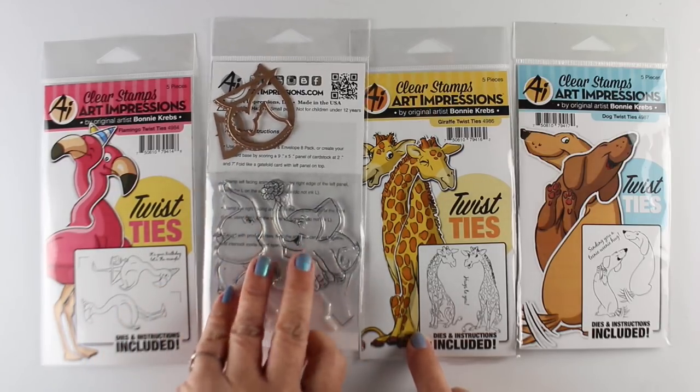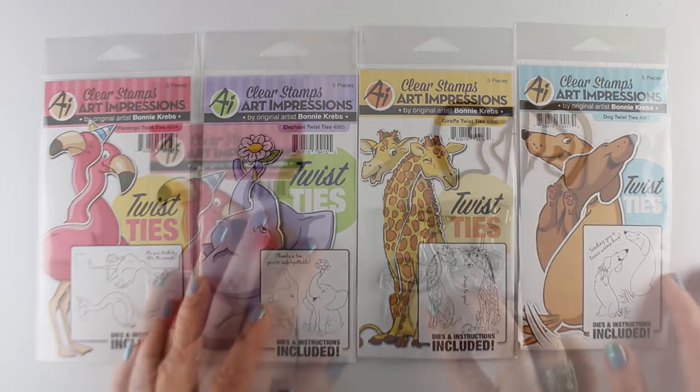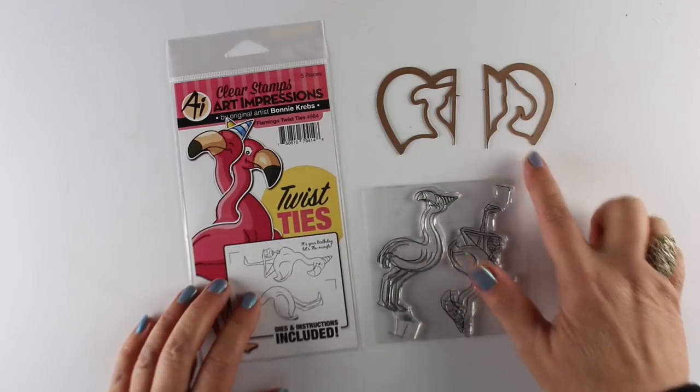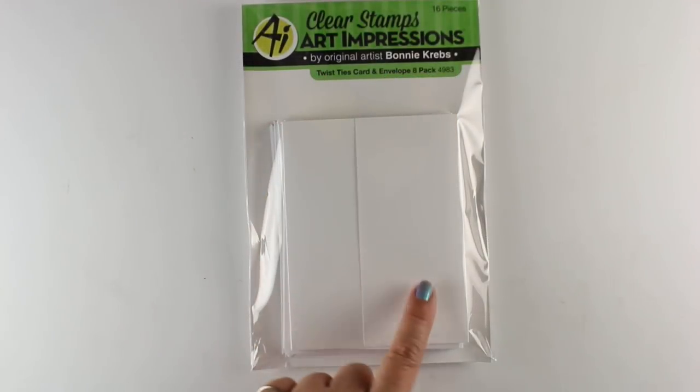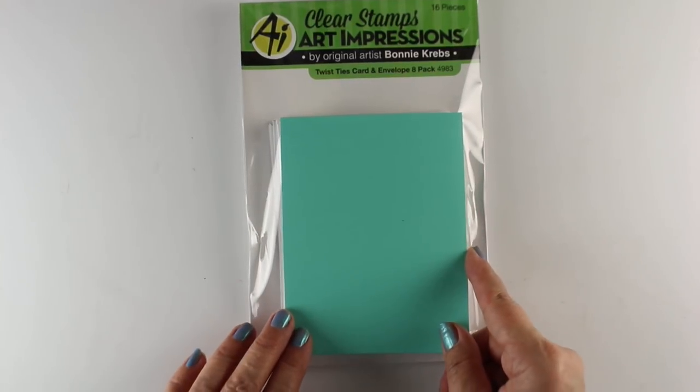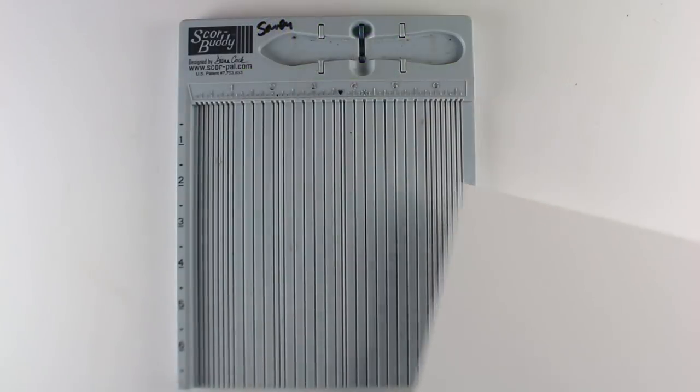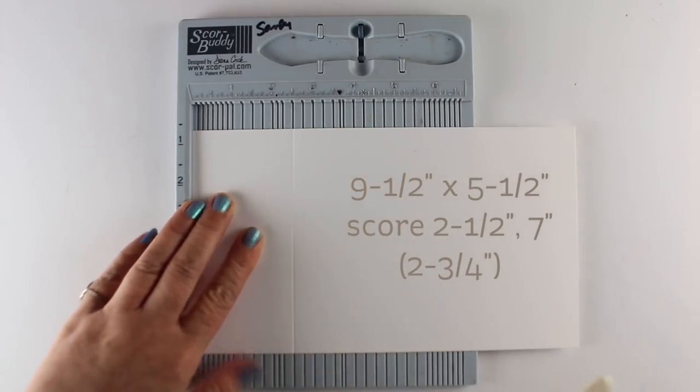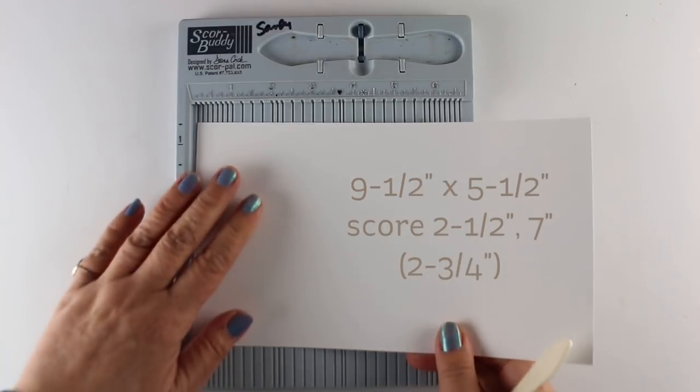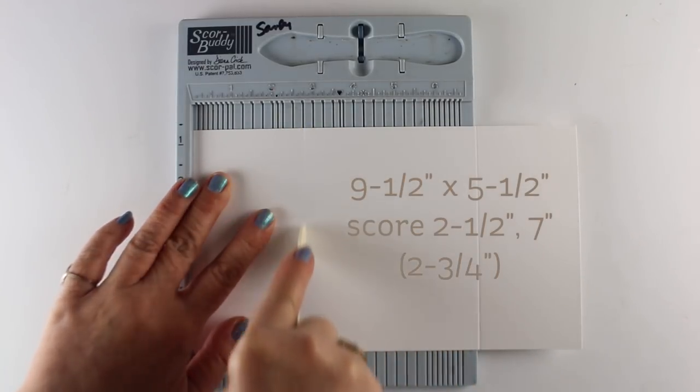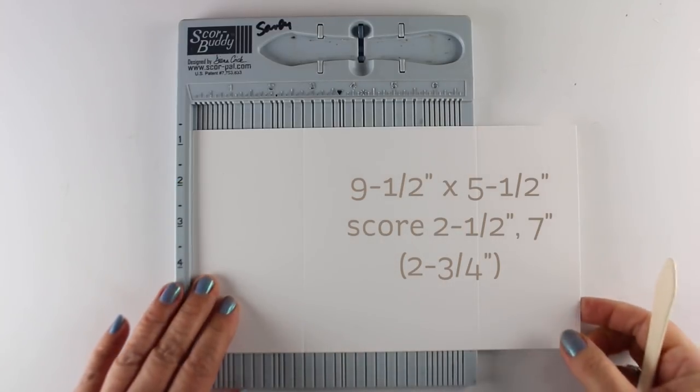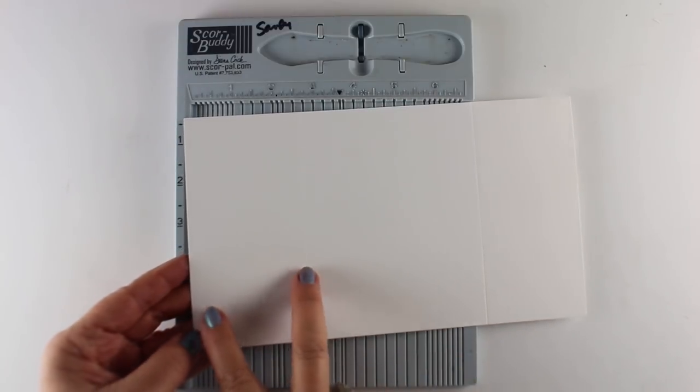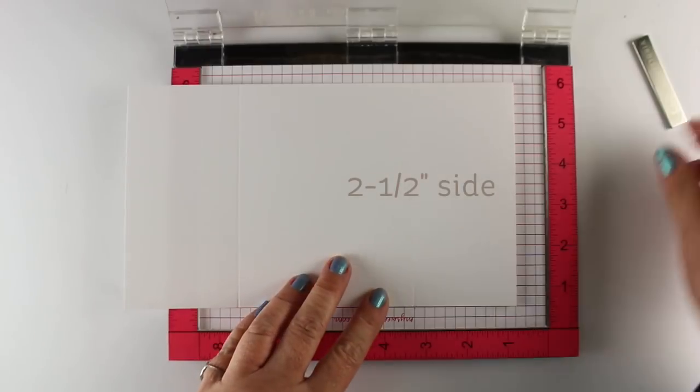Let's get started. I'm going to work on the flamingo and show you how to color it with Copic markers. First, I want to show you this pack of papers. They fit into an A2, but I'm going to cut my own so you can see how that's done. It's nine and a half by five and a half, and you score it from one side at two and a half and the other side at two and three quarters. Or if you have a long board, you just score at two and a half and seven. You want the larger one on the left and the smaller one on the right.